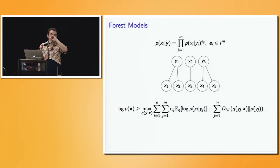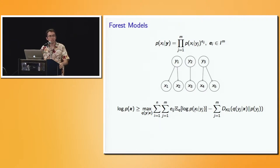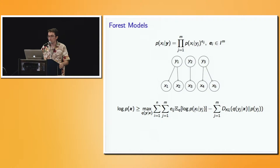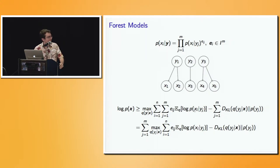We don't always have to deal with the explaining away effect. Here's a very simple model — I call it a forest model because the graphical structure is a forest. You have one tree per latent variable, and the latent variables are conditionally independent given the observation. The conditional distribution has a special form: E_ij is an indicator of which latent variable Y_j is the parent of observed variable X_i. When you plug this into the ELBO, you get an objective that separates as a sum of terms each involving only a single latent variable Y_j. So we switch the maximum with the sum, and all of a sudden we can do inference in parallel — that's the name of the presentation, parallel inference.